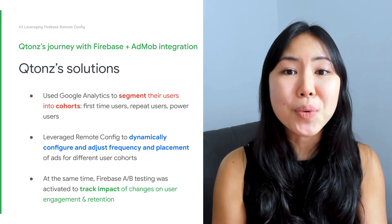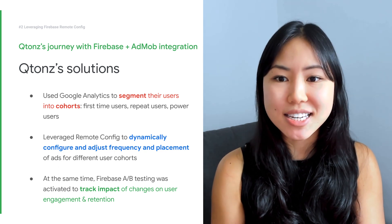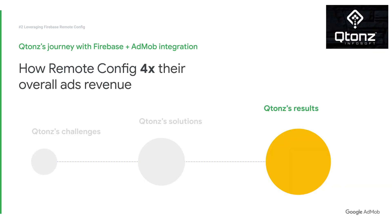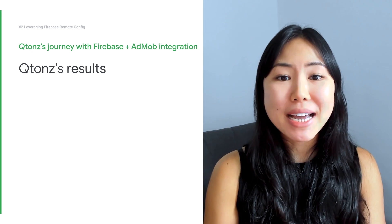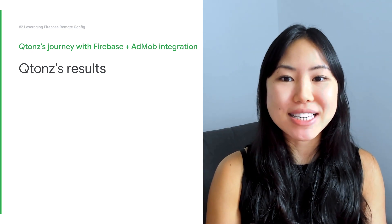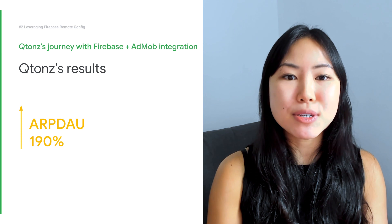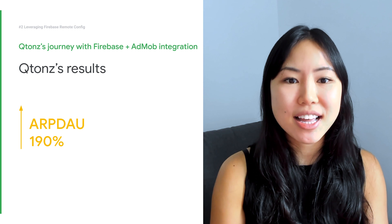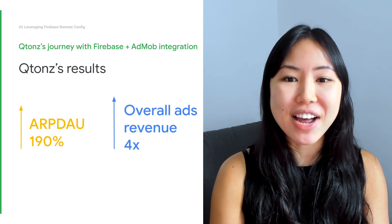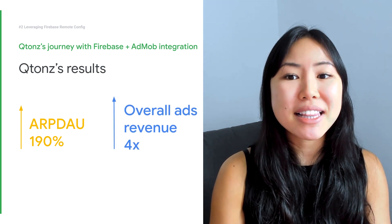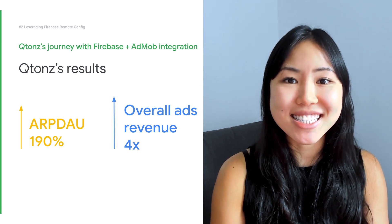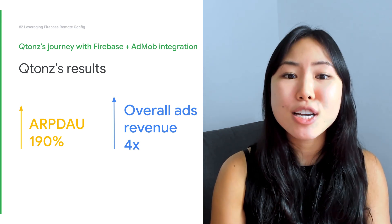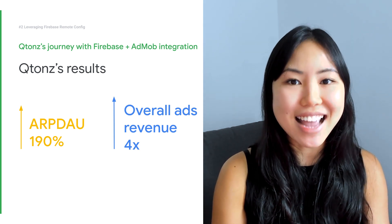They then leveraged Remote Config to dynamically configure and adjust the frequency and placements of ads for different user cohorts. At the same time, they were also using Firebase A/B testing to see the impact of these changes on user engagement and retention. By experimenting with different ad formats and frequency combinations, Qtons was able to increase their average revenue per daily active user by 190%. They also tracked a four times increase in overall ads revenue. By leveraging the power of Firebase and monetization insights from AdMob, the team was able to effectively personalize the ad experience to drive both user engagement and bottom-line results.